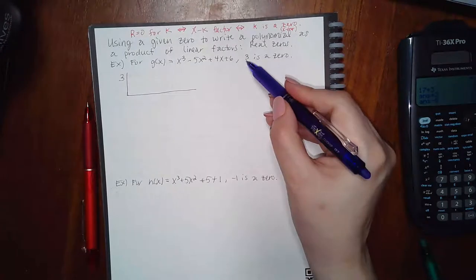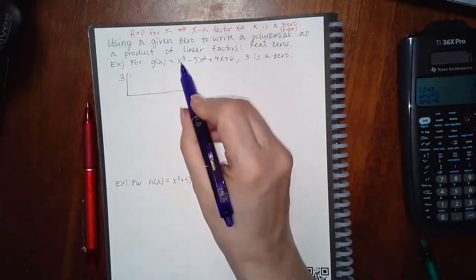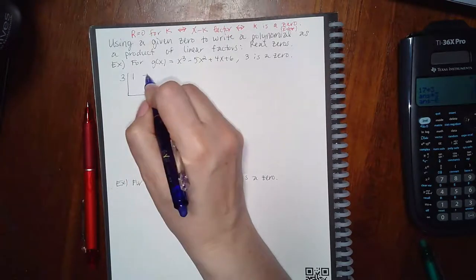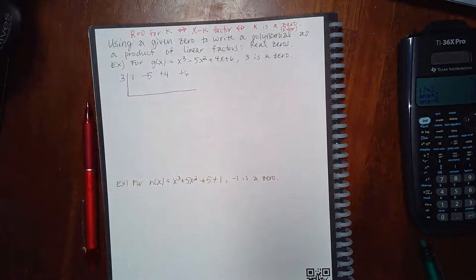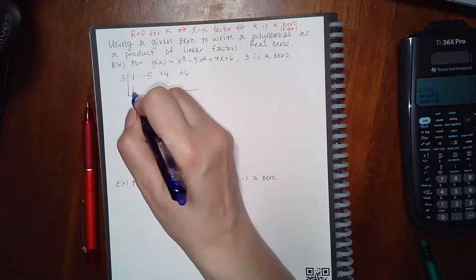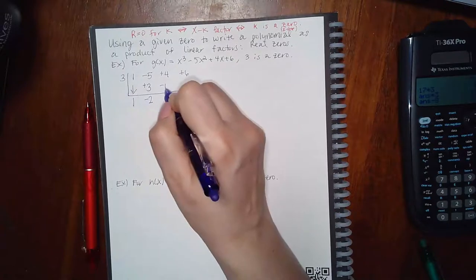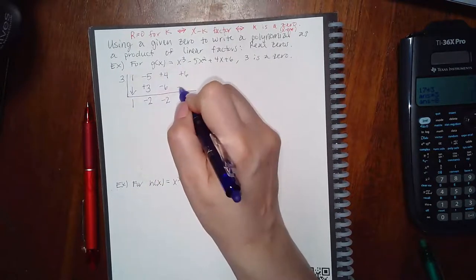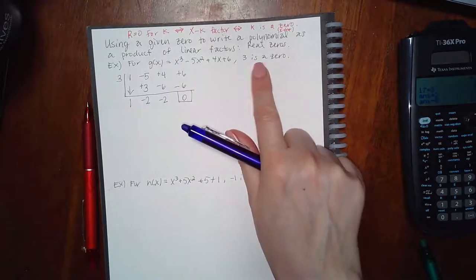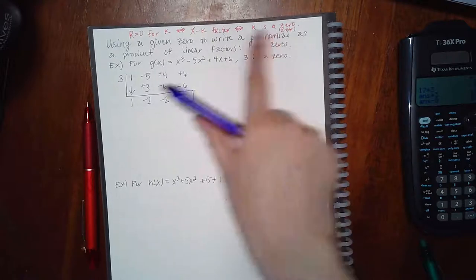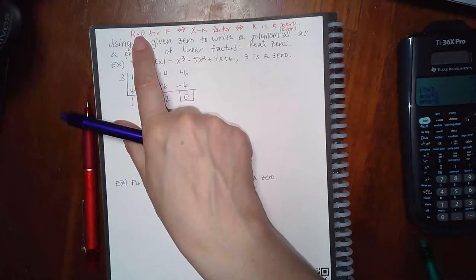I have x cubed, so I need coefficients for x cubed, x squared, x, and my constant. Bring down the first number, multiply, combine, multiply, combine, multiply, combine. I knew I was going to get 0 because they said 3 is a zero, and we know if a number is a zero, the remainder equals 0. This is my constant, this is my x, and this is my x squared.